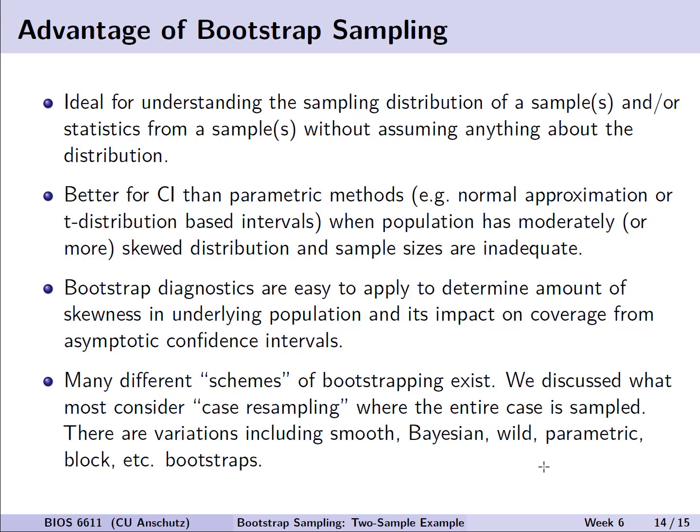We can also result in better confidence intervals than we would achieve with parametric methods. So for example, the normal approximation or the normal percentile confidence interval, or using a t-distribution-based interval to add uncertainty in our asymptotic case. And this is especially true if the population has moderate or greater skewness to it, or if we have small sample sizes.